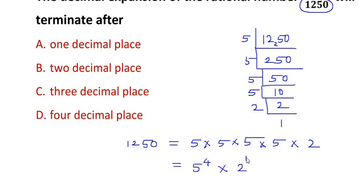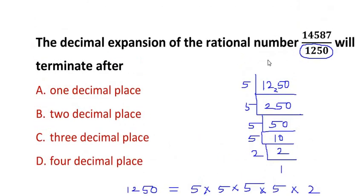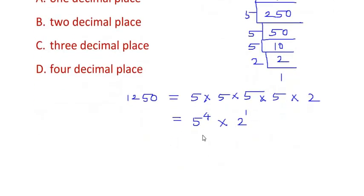Once we get it in the form of 5's and 2's, remember that we always try to get the denominator in terms of 2 to the power of n times 5 to the power of m. If we get the denominator as powers of 2 and powers of 5, then the decimal terminates. Here we can see that 1250 is in exactly that form: 5 to the power of 4 times 2 to the power of 1.